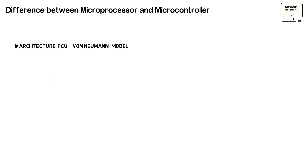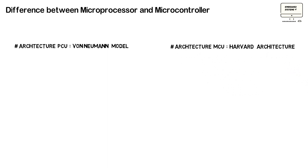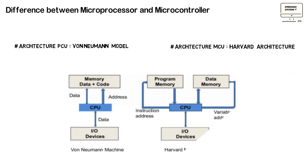The last important difference is the architecture. Microcontrollers are based on the Harvard architecture, where program memory and data memory are separate. While microprocessors are based on the von Neumann model, where program and data are stored in the same memory.